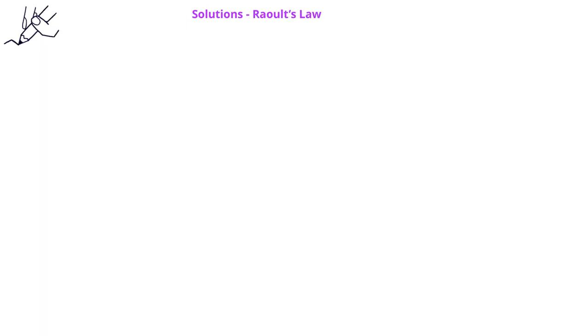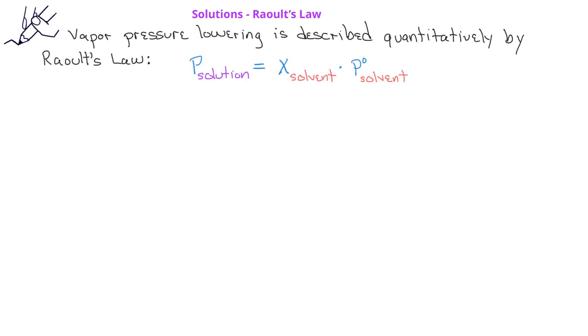Vapor pressure lowering by the presence of a solute can be described quantitatively by Raoult's law. Raoult's law says that the vapor pressure of a solution is equal to the mole fraction of the solvent multiplied by the vapor pressure of the pure solvent. Let's look at an example using Raoult's law.